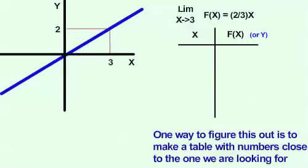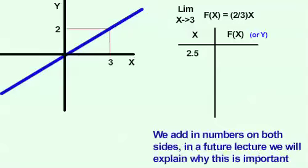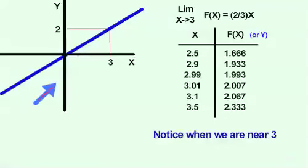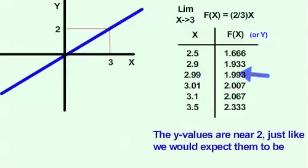One way to figure this out is to make a table with numbers close to the ones we're looking for. We add in numbers on both sides of x equals 3. In a future lecture, we will explain why this is important. Next, we fill in the corresponding y values. Notice when we are near 3, the y values are near 2, just like we would expect them to be.